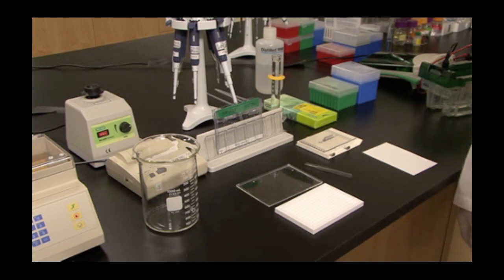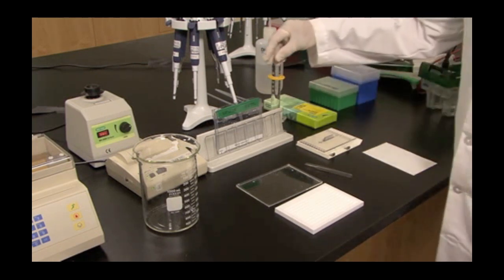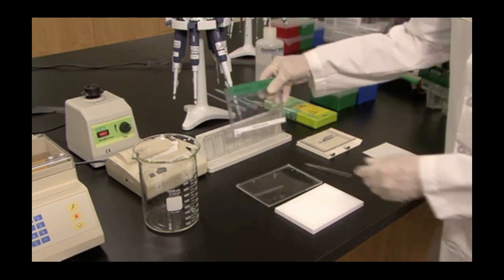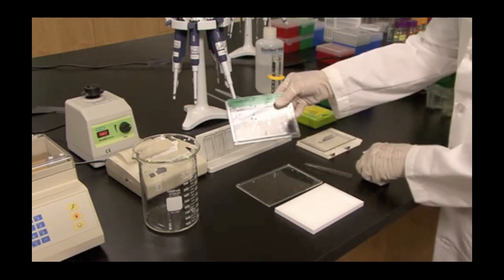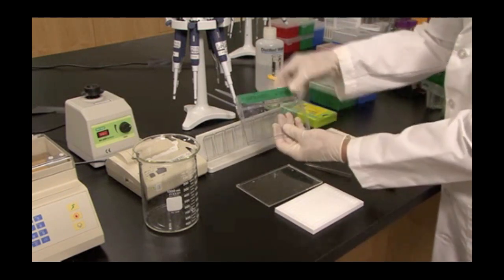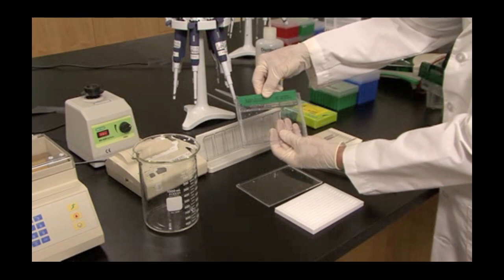I am going to use Bio-Rad's Criterion precast gels, which accommodate the 11 centimeter IPG strips that we ran earlier. Prepare the gel by removing the sealing tape from the bottom of the gel, and slide out the comb from the top.